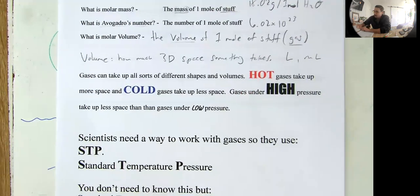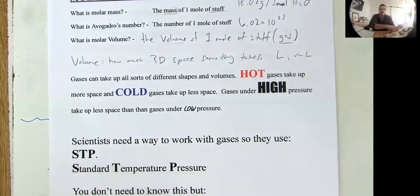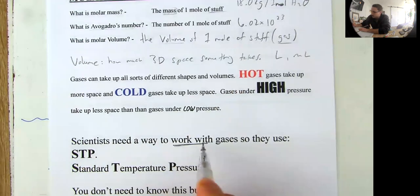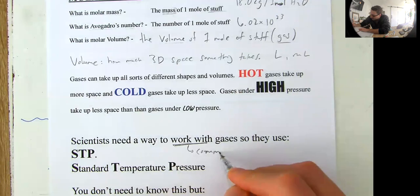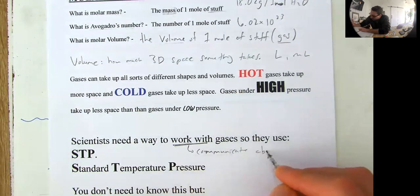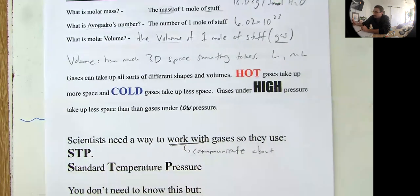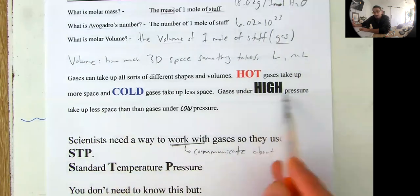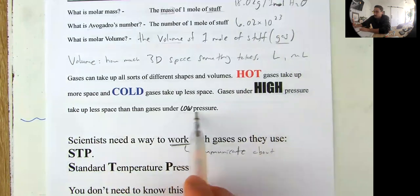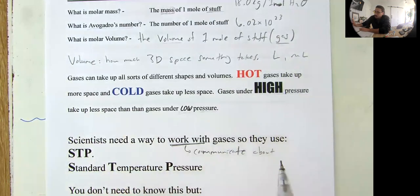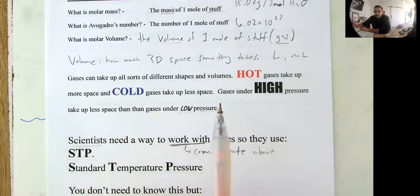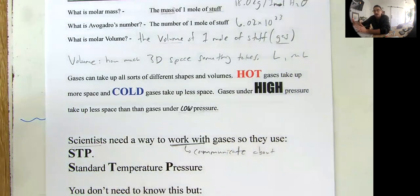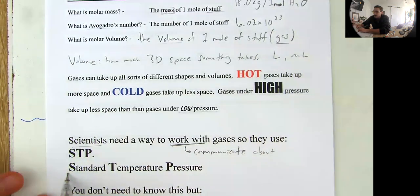So scientists need a way to work with gases. So they use something called STP. And when I say work with, work with gases, I mean like communicate about. Okay. So the scientific community is really cool. It's a global community. And in the world, there's hot places and there's cold places. And there's places that have high pressure, higher pressure, like closer to sea level, like where we are. And there's places with lower pressure, like up in the mountains. So when scientists are doing experiments on gases all over the world, they need a way to communicate about them so that there's no confusion.